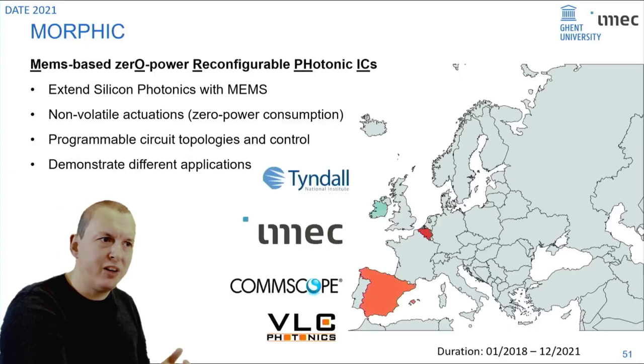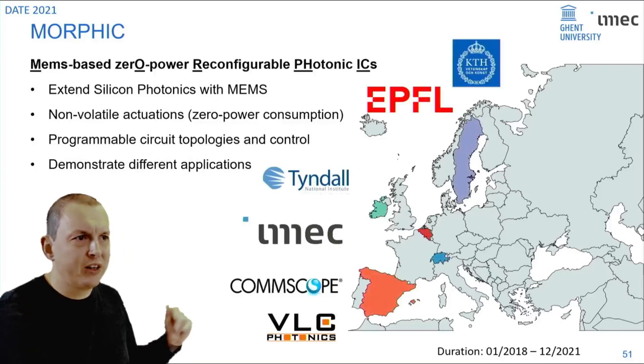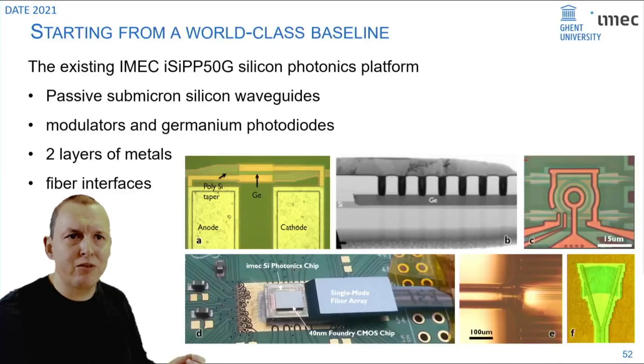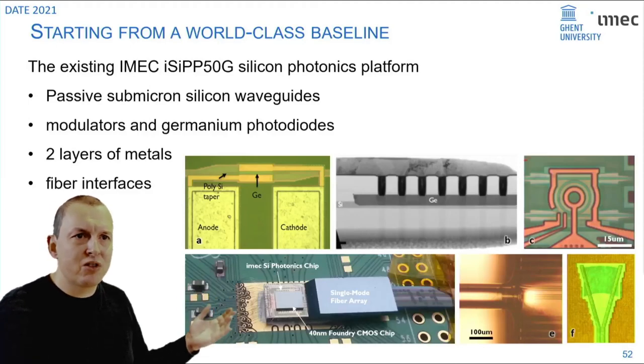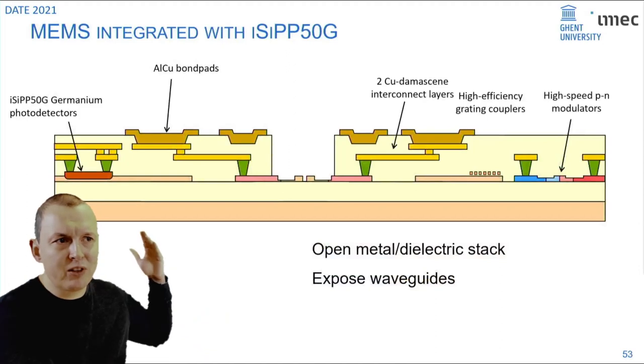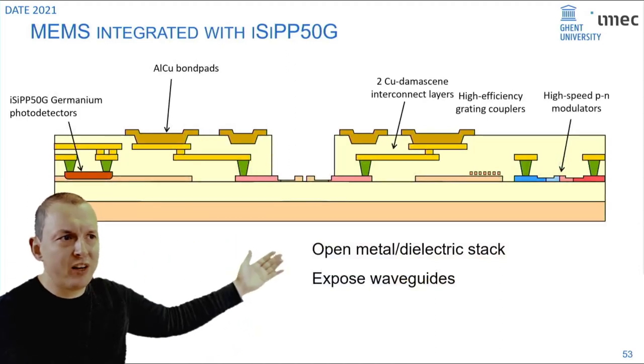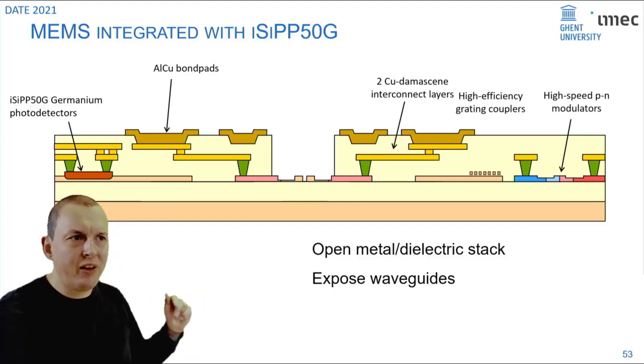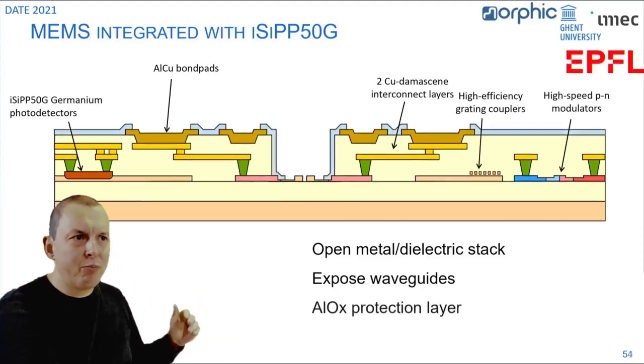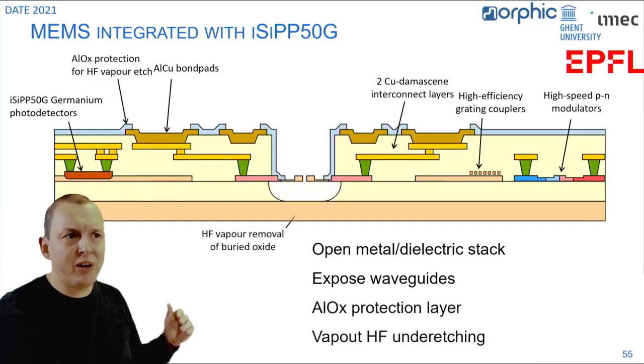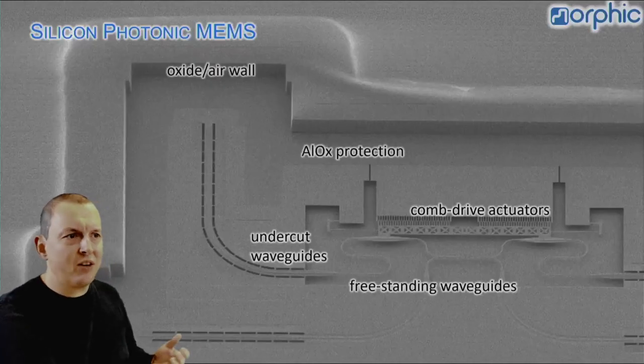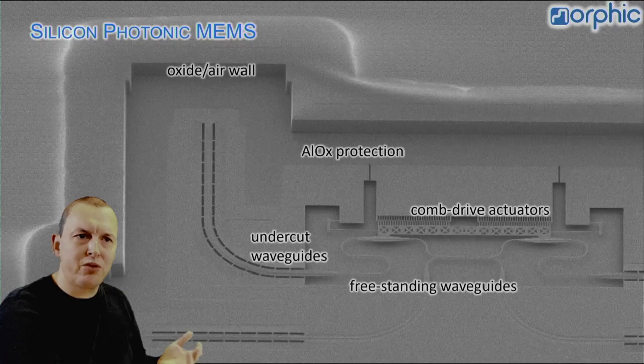This is exactly what we've been pioneering in the project called Morphic with a number of European partners. It's to take silicon photonics, a working high quality silicon photonics platform, and then integrate the MEMS. Starting from a platform which already contains photo detectors, waveguides, modulators, grating couplers and metalization, we expose the stack of the waveguide and etch it down, add a protective layer and then undercut the waveguides locally using VaporHF. That gives you the freestanding waveguides like these devices that you can use as a tunable coupler or a phase shifter.